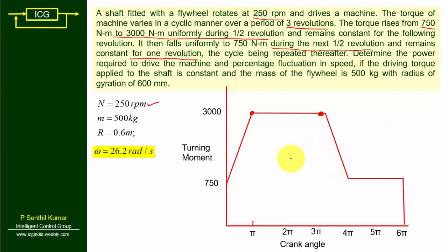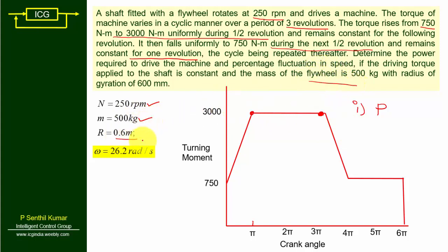This is one complete cycle shown in the turning moment diagram for the problem. We need to determine: subdivision one — the power required to drive the machine, and subdivision two — the coefficient of fluctuation of speed, given that the driving torque applied to the shaft is constant, the mass of the flywheel is 500 kg, and the radius of gyration is 0.6 meters.